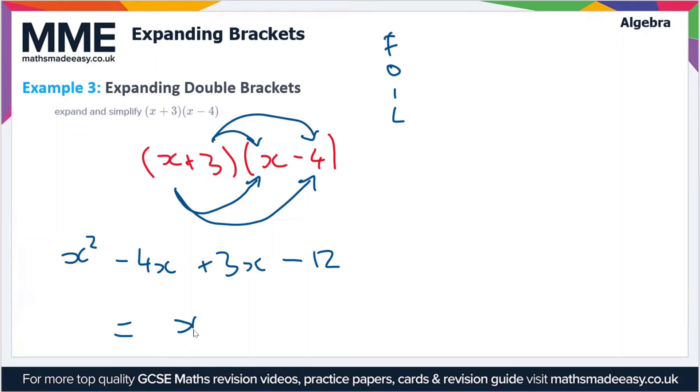Now we collect the like terms. We've got x squared as one term on its own, then the like terms of minus 4x and plus 3x simplify to minus x, and then minus 12 on the end. So the simplified expanded bracket is x² - x - 12.